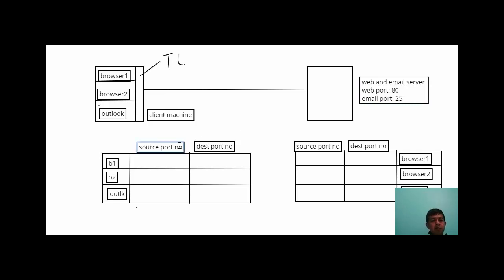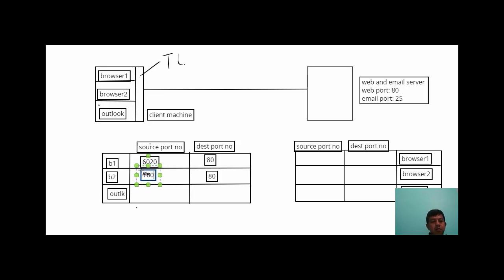For browser one sending a request to the web server: destination port is 80, source port is, say, 6020. For browser two also sending to the web server: destination port is 80, source port is, say, 7000 or 8000. For the Outlook application sending to the email server: destination port is 25, source port is, say, 8001.